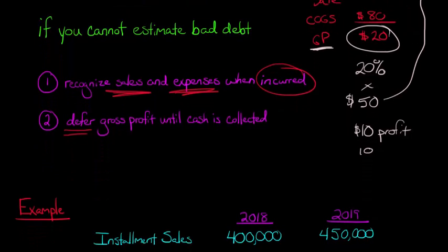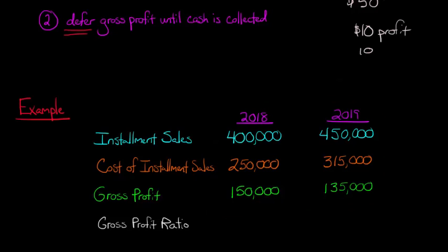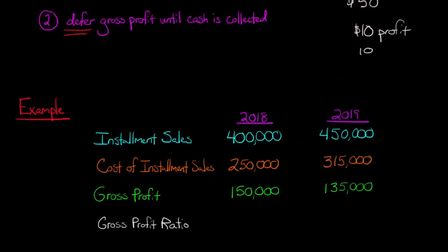That's a simplistic explanation — let's look at some journal entries with real numbers. Say you have a land development firm that makes installment sales over two years, 2018 and 2019. The first thing we need to know is the gross profit ratio. To calculate it, we take gross profit and divide it by the amount of installment sales. For 2018, that's 37.5%, and for 2019 it's 30%.